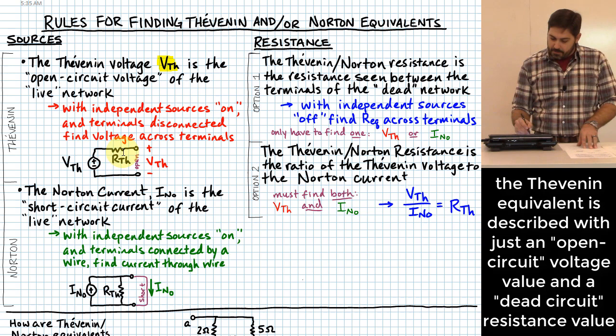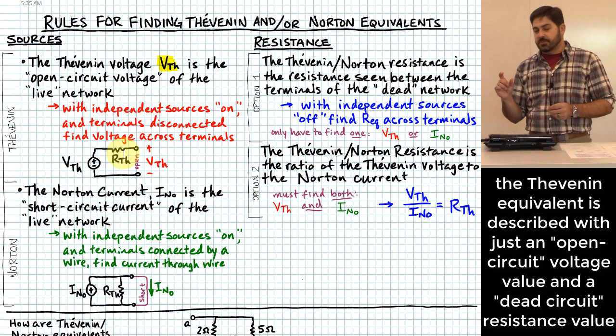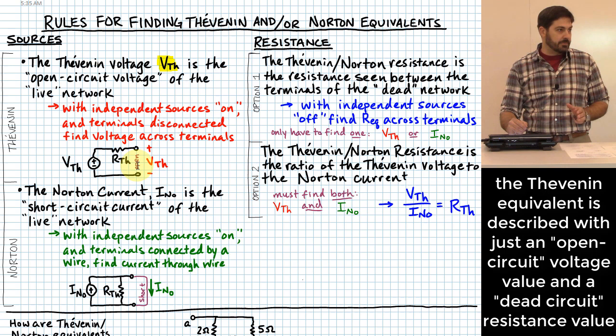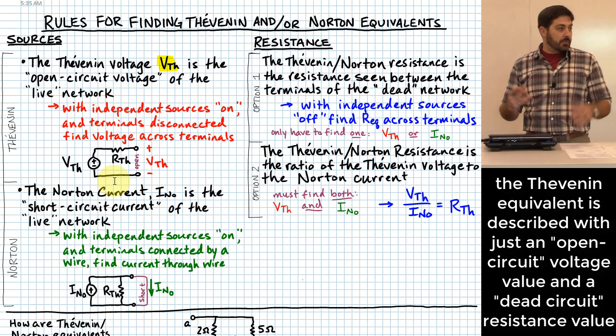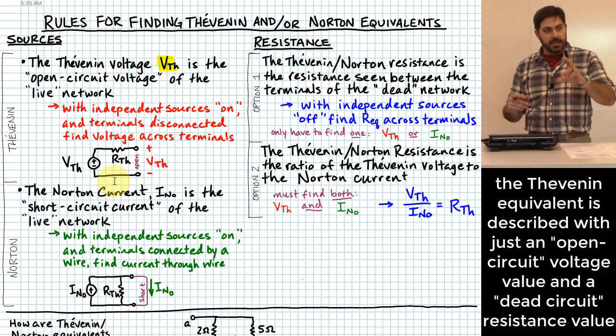That's called a Thevenin equivalent, and all you have to do is find the voltage value and the resistance value appropriate to model the complicated circuit. It will behave exactly the same way when connected to another linear circuit. To find VTH, the Thevenin voltage, you leave the two terminals open — nothing connected to them — and do whatever analysis you need inside the network to figure out the voltage across those open circuit terminals. That becomes your Thevenin voltage.